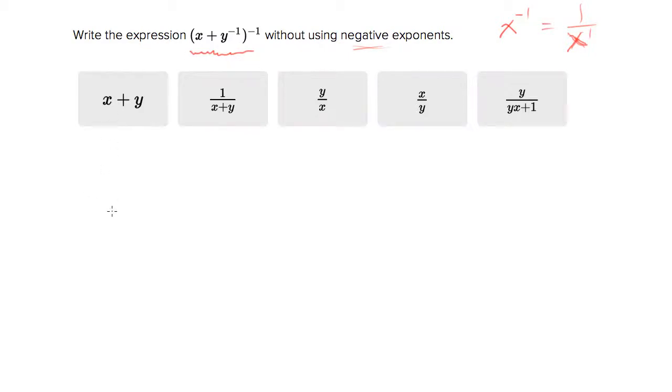We'll say the inside of this becomes x plus one over y instead of y to the negative one. And instead of all of that to the negative one, let's put all of that to the first power, but as a fraction. So there you go. That's your answer.